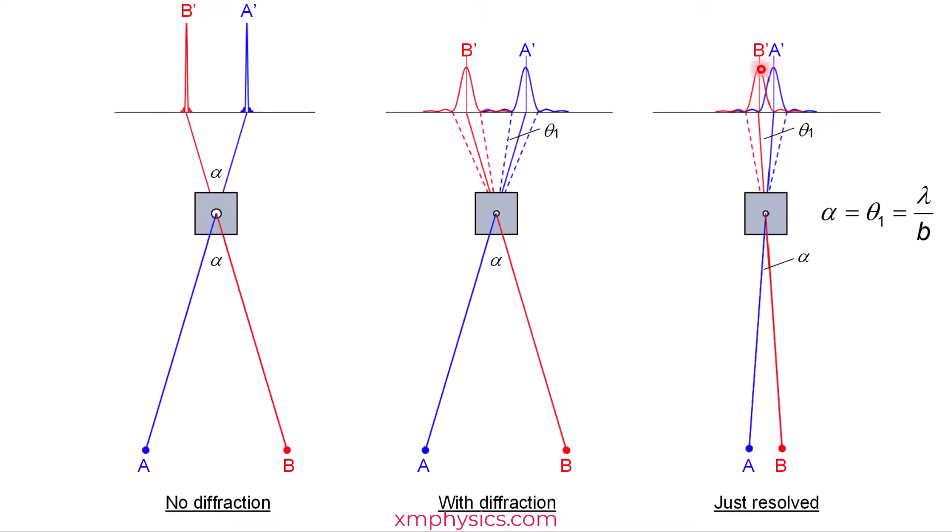Now notice the spacing between the two images is decided by the angular separation between the two objects. But the spread of each image is determined by the size of the slit. If you think of it as a narrow slit, then we have the formula. The first minimum happens at lambda divided by b, where b is the slit width.